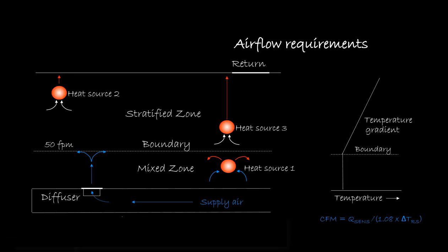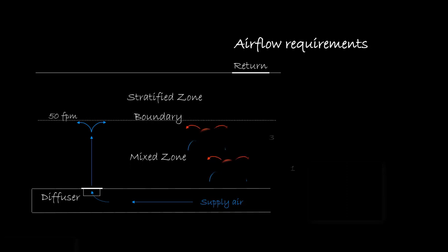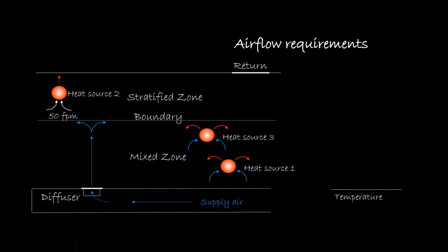UFAD supply air flow rates are dependent upon the differential between the room supply and return air temperatures. Vertical projection of the supply air jets has a significant impact on cooling airflow rates. As the vertical projection increases, more heat gains are captured and deposited in the lower mixed zone where they must be considered in the supply air flow calculations. The vertical temperature gradient corresponding to a greater jet projection might look something like this. Notice that the capture of heat gains within the mixed zone results in less stratification and thus a lower return air temperature.